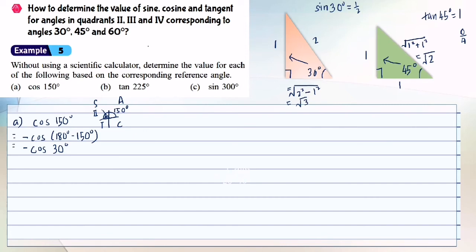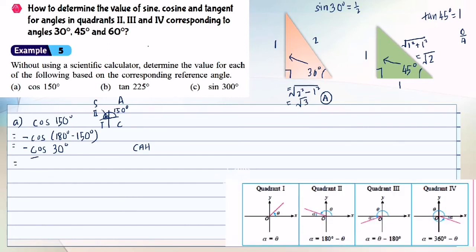Without using the calculator, refer to the special triangle. Cos 30 — cosine is adjacent over hypotenuse ('CAH'). The adjacent side is the square root of 3 and the hypotenuse is 2. Don't forget to copy down the negative, so the answer is negative square root of 3 over 2.